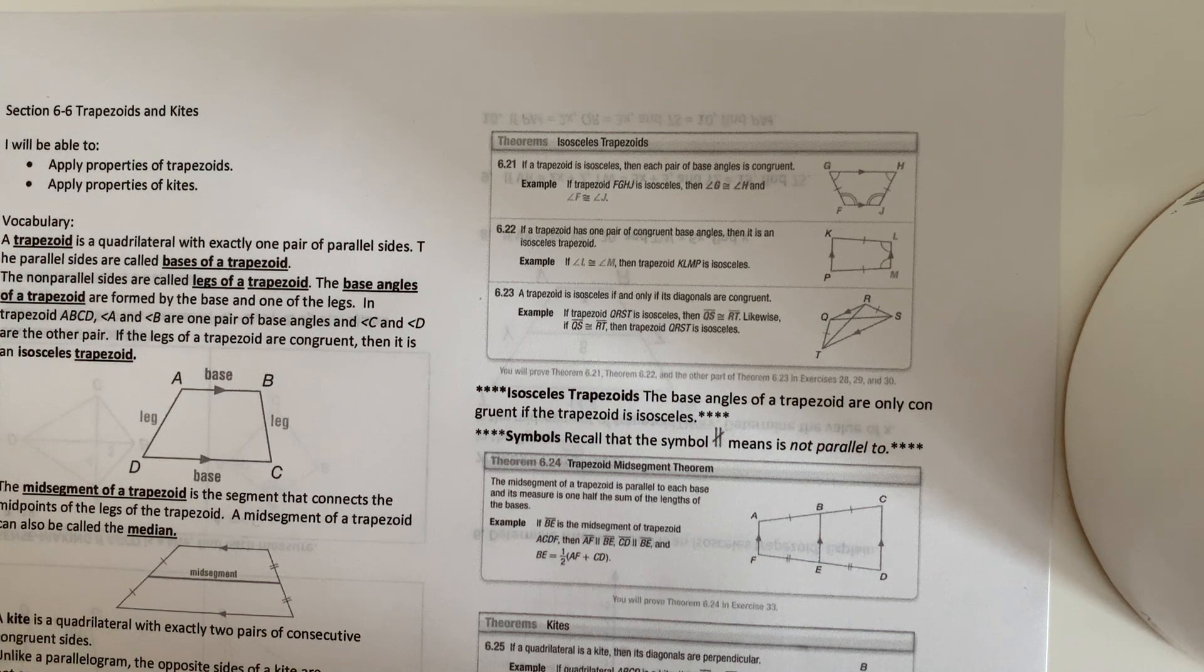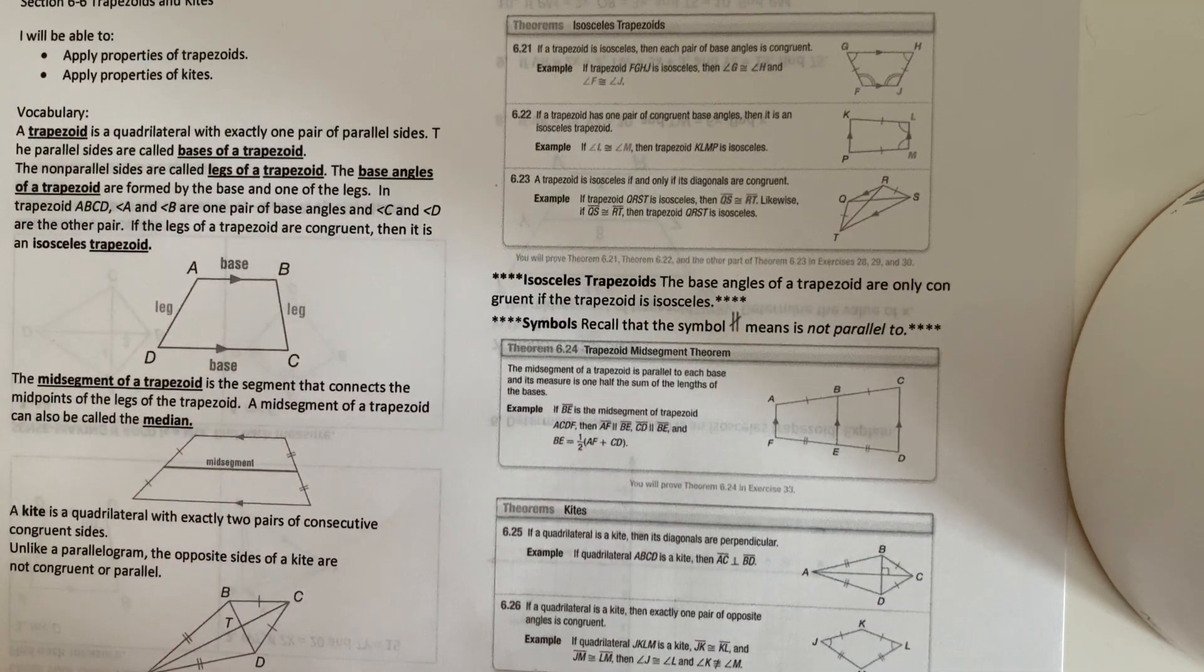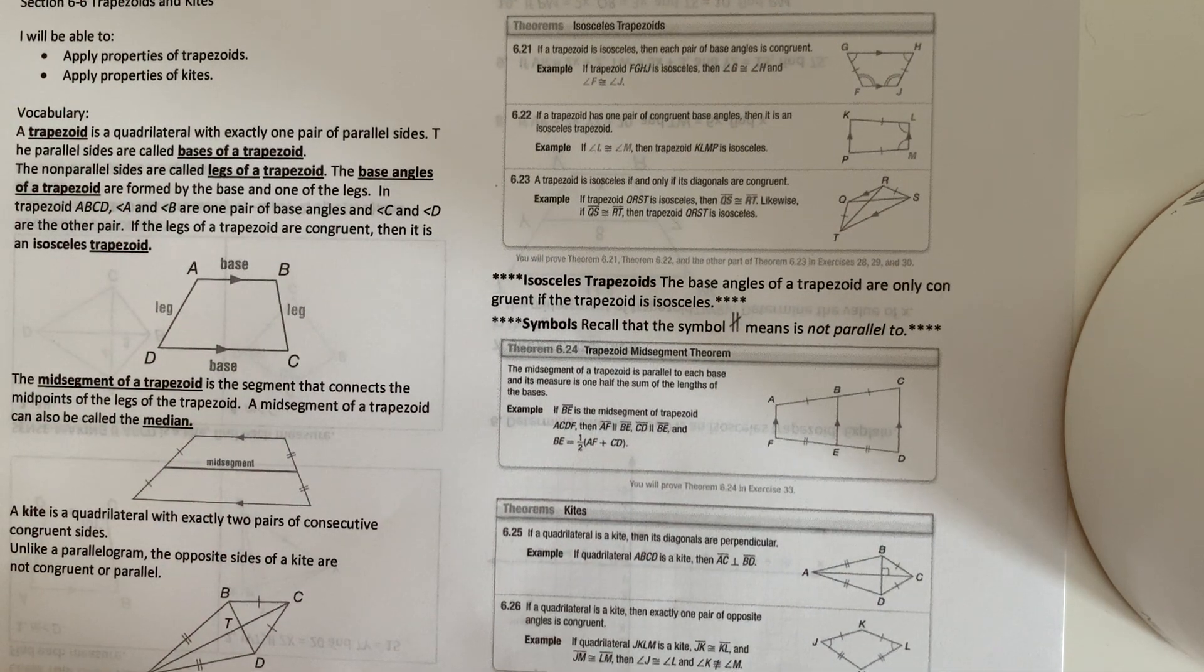A trapezoid is isosceles if and only if its diagonals are congruent. And then it says isosceles trapezoids. The base angles of a trapezoid are only congruent if the trapezoid is isosceles. It's not all the time.